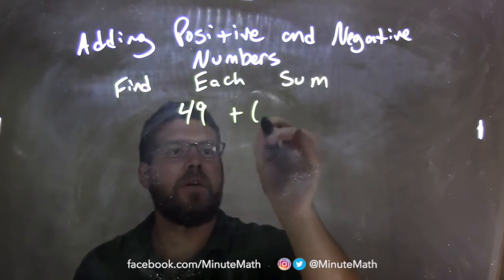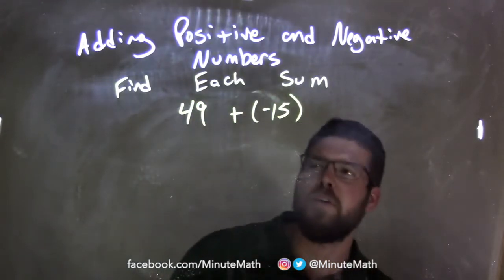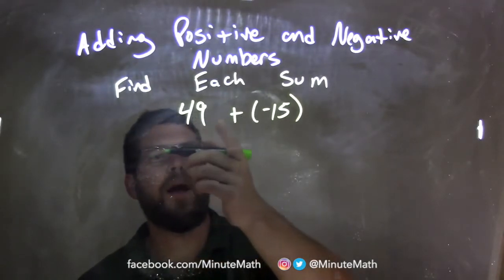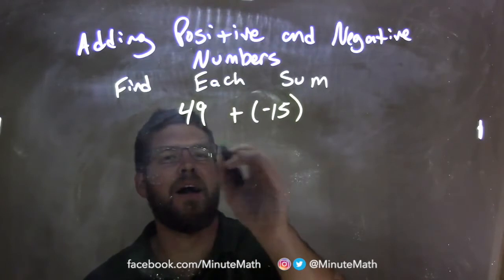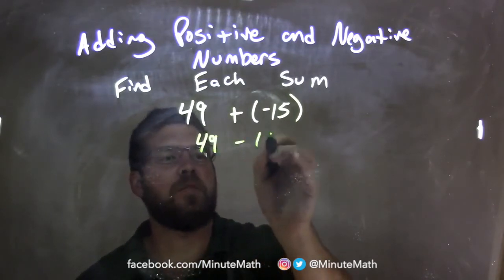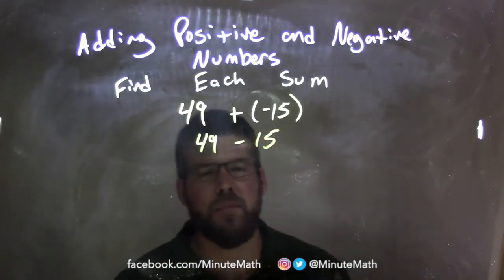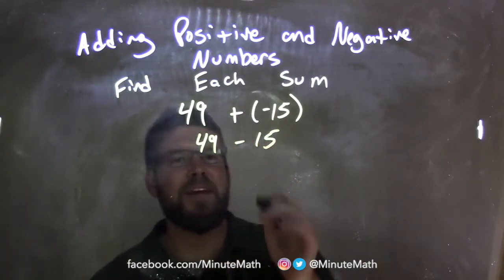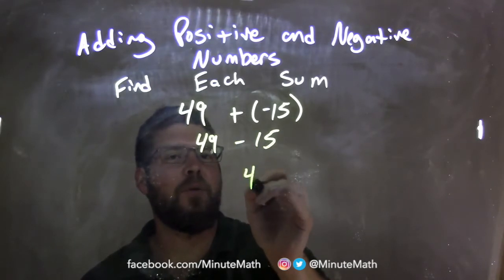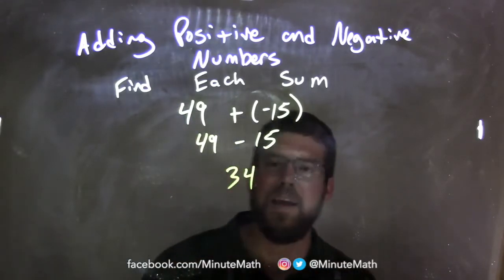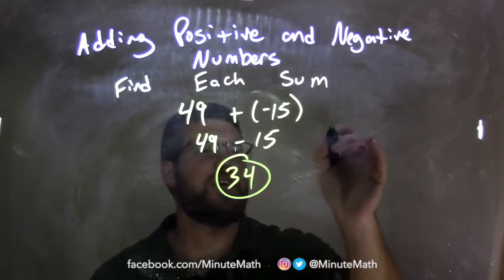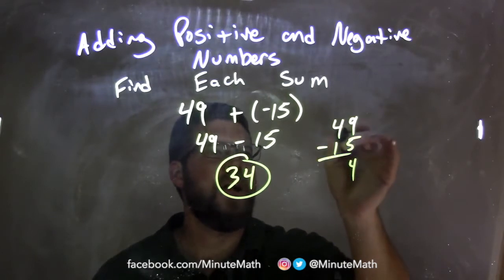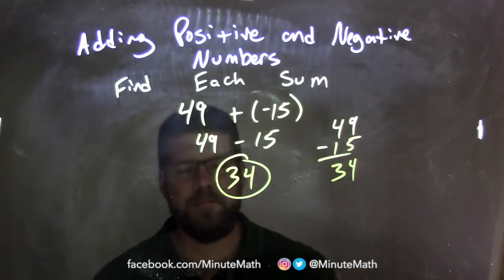49 plus a negative 15. That's the same thing as 49 minus 15. And 49 minus 15 is something you probably already know how to do. 49 minus 15: 9 minus 5 is 4, and 4 minus 1 is 3. So 34 is my final answer.